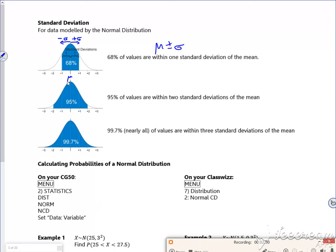Some packs will tell you it's two-thirds, but our exam board says 68%. Then if I go for two standard deviations away from the mean, so there's my mu again, so if I go for two standard deviations there.